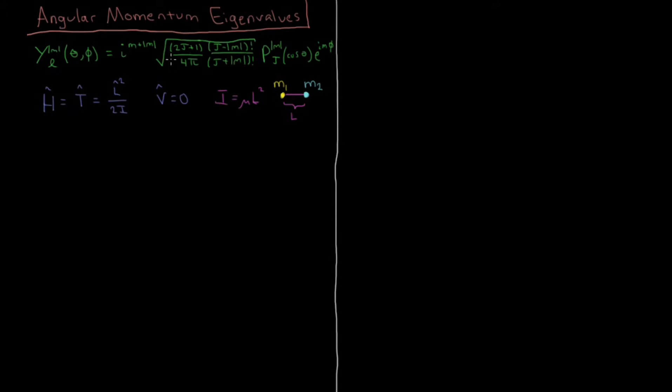times j minus absolute value of m factorial over j plus absolute value of m factorial times the associated Legendre function p of j absolute magnitude m,